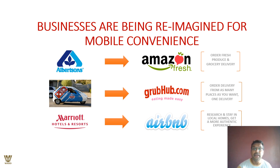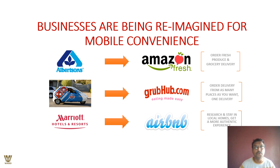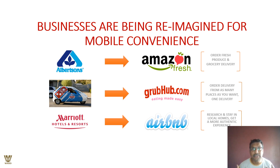Businesses are being reimagined for mobile convenience. Albertsons has put their product on Amazon Fresh, and most small businesses have placed their products on Amazon or other online marketplaces prevalent in their country. Dominos has its own delivery service, and startups like Grubhub are delivering food to your doorstep. Even Marriott — an established brand of over a century — is partnering with Airbnb, a company not even a decade old. This tells us: business is where the customers are, and customers are increasingly found online.